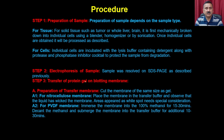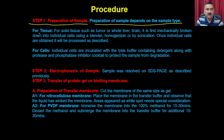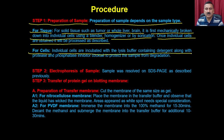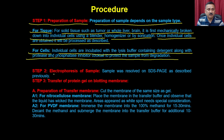As per the procedure: in step one, you prepare the samples. Preparation depends on the sample type. For solid tissue such as tumor, whole liver, or brain, it is first mechanically broken down into individual cells using a blender, homogenizer, or biosonication. Once individual cells are obtained, they are processed as described. For cells, individual cells are incubated with lysis buffer containing detergent along with protease and phosphatase inhibitor cocktail to protect the sample from degradation. Step two is electrophoresis of the sample, which we have discussed in the previous lecture.